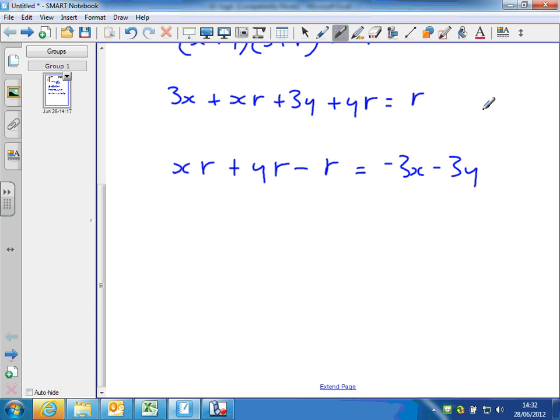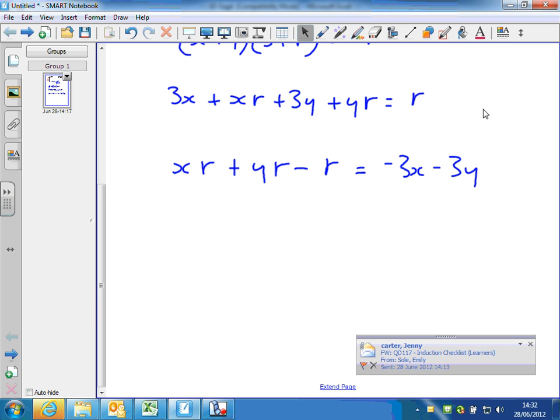So now at this point I could factorize, take the r outside a bracket, but I know that the fact that I've got a minus sign here and a minus sign here is going to be a problem. And I'm tempted to get rid of that now by multiplying, and I've done this in a similar question, multiplying both sides by minus 1, which is a common thing to do.